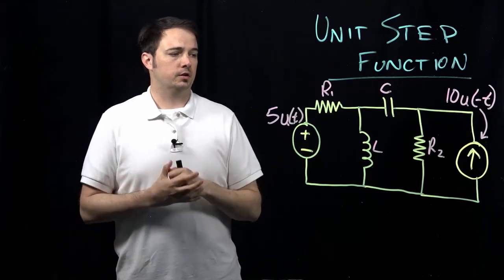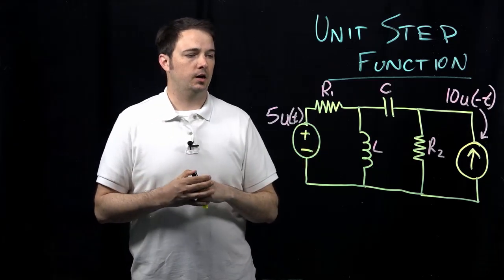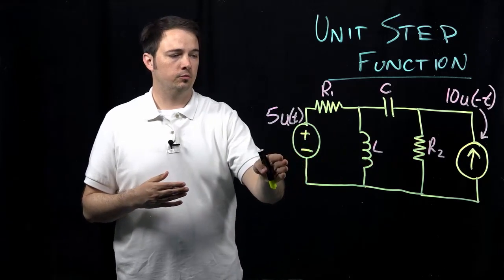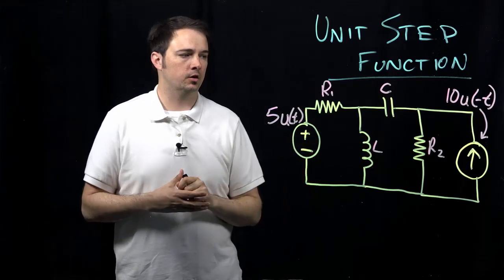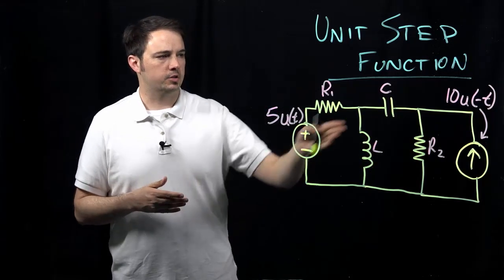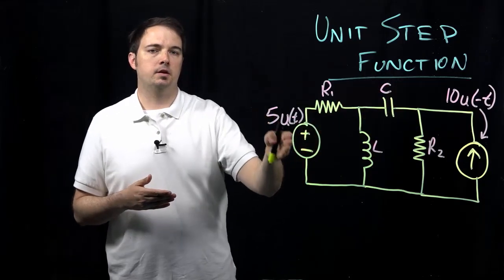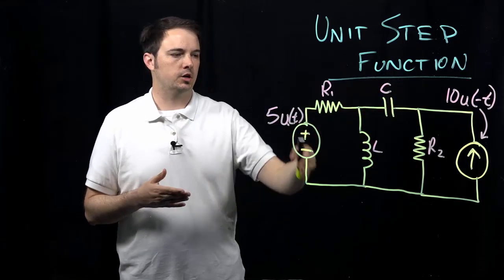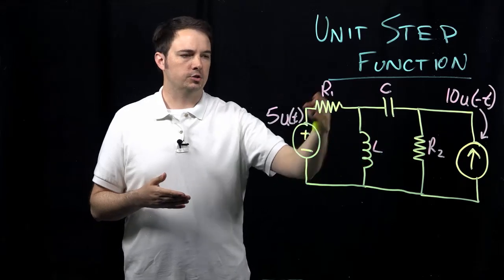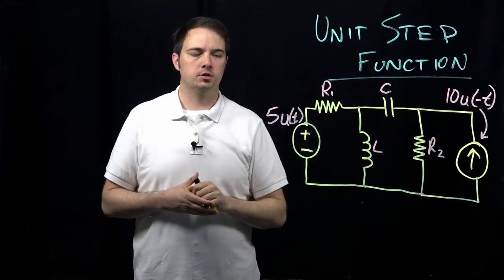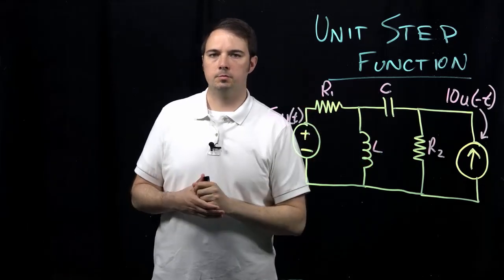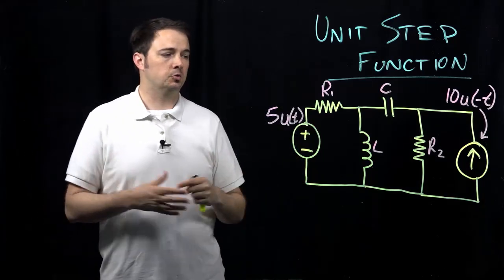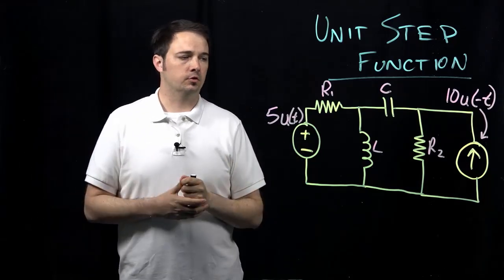Here I have just a generic circuit with two different sources — a voltage source and a current source — and both of these sources are dependent on this unit step function. That's going to change what happens with the various currents and voltages in the circuit. Here we have an RLC type circuit that we could be applying this to, but it could be universally applied.